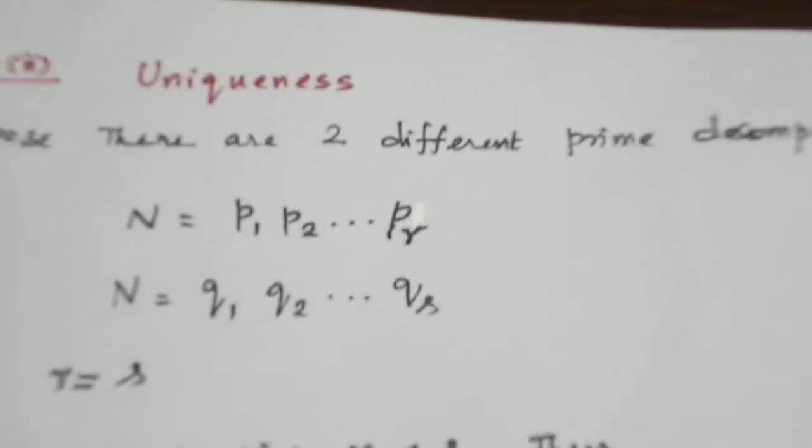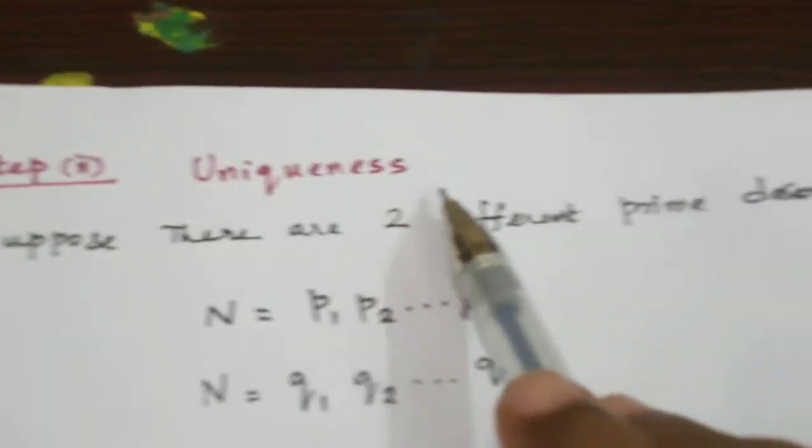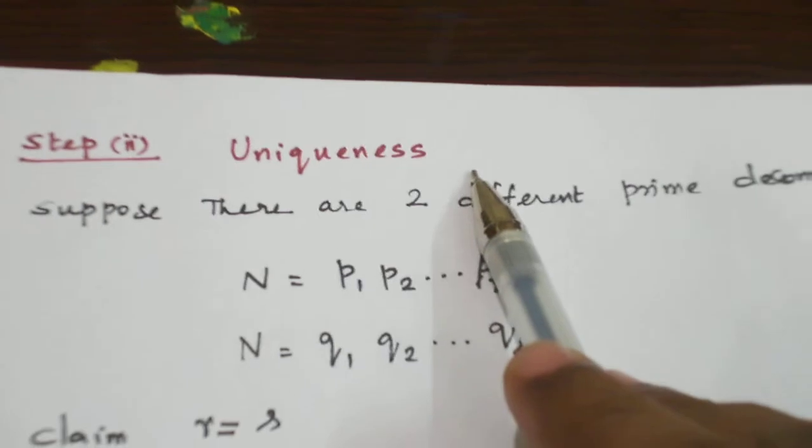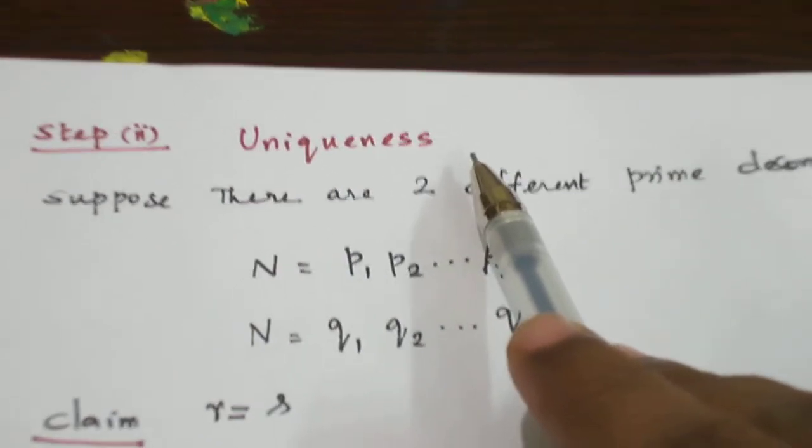Now the second step. By the principle of mathematical induction, the result is true for all integers. Let us now prove step two, that is the uniqueness step.